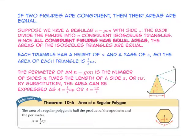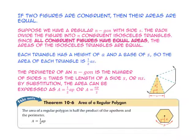The perimeter of an N-gon is the number of sides N times the length of a side S, or N times S. By substitution, the area can be expressed as area equals one-half the apothem times the perimeter, or area equals the apothem times the perimeter divided by 2. Theorem 10-6 gives us the formula for the area of a regular polygon: the area of a regular polygon is one-half the product of the apothem and the perimeter.